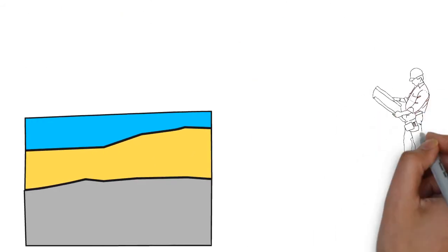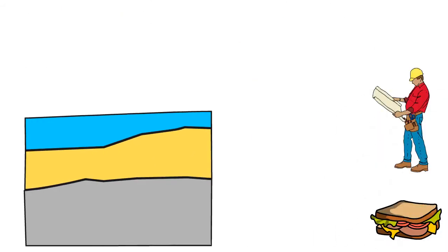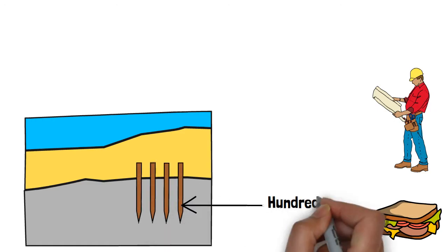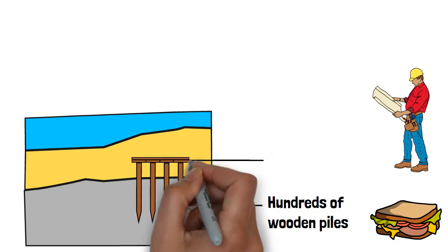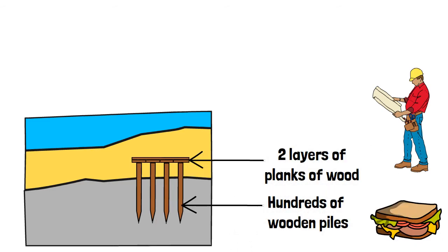The answer was to build a fancy foundation sandwich. This consisted of hundreds of wooden piles, which would be driven into the ground. The filling would be two layers of planks of wood, which would then be laid on top of the piles. Then to top it off,